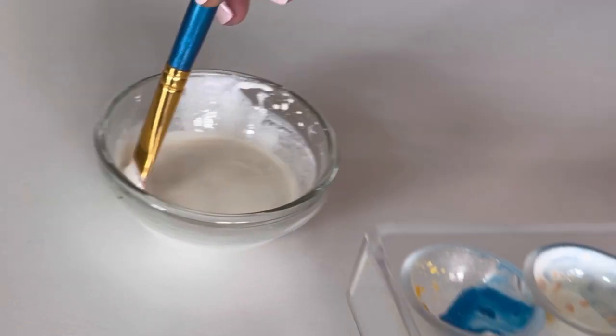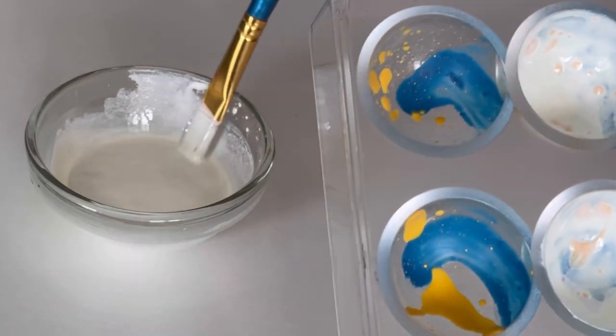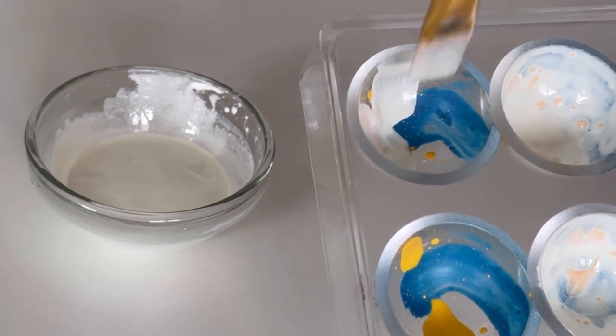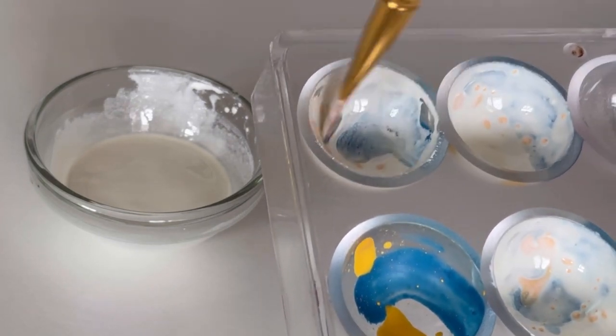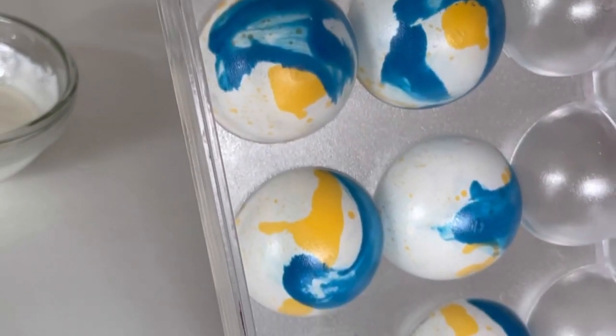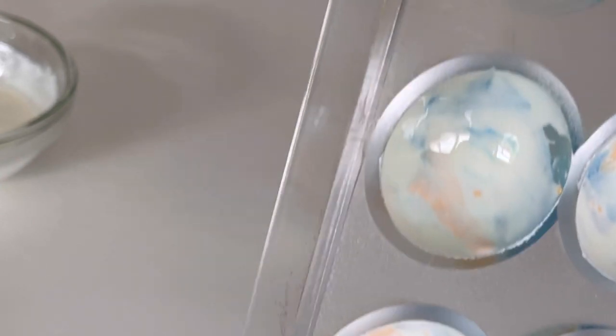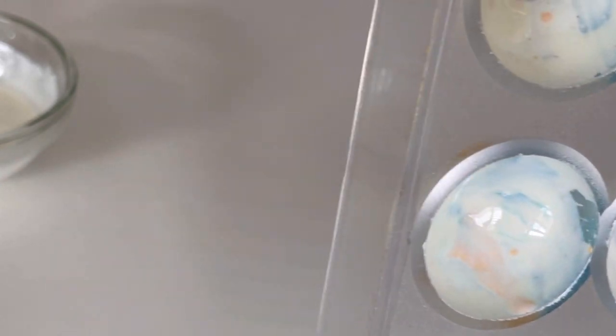Lastly, I'm going to paint the entire cavity using this white cocoa butter, which I've already tempered as well. Now that I've painted the cavities, I'm going to pop it in the fridge one more time for five minutes to set.